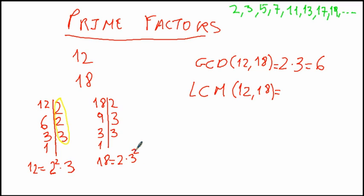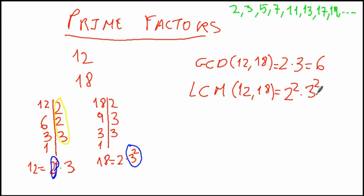To find the lowest common multiple, we take all common and non-common factors with the biggest exponent. So we choose 2 to the power of 2 and 3 to the power of 2. That gives us 4 multiplied by 9, which is 36. So 36 is the lowest common multiple and 6 is the greatest common divisor.